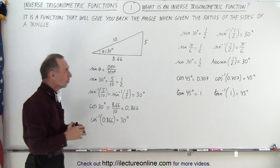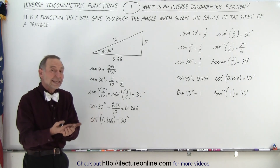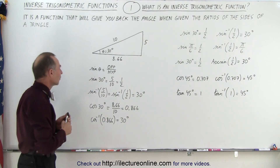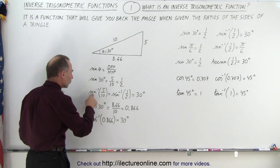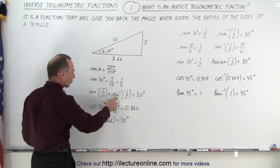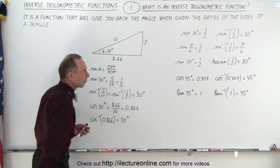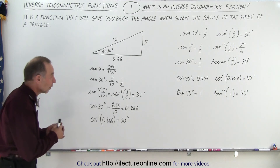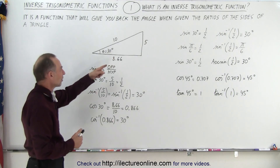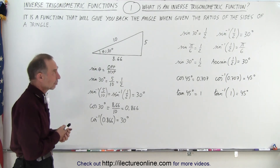Inverse functions give you the ratio and then want you to calculate the angle back — they do the reverse. Here you can see that if you take the inverse function of the sine of the ratio 5 over 10, which is the same as the inverse sine of 1 half, that gives you back the angle of 30 degrees. So you get the ratio of the sides and then find the angle — that's what we call the inverse trigonometric function.